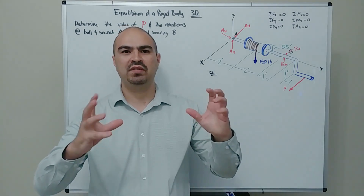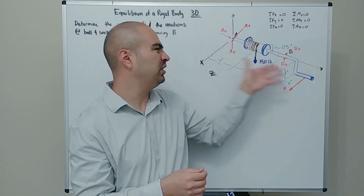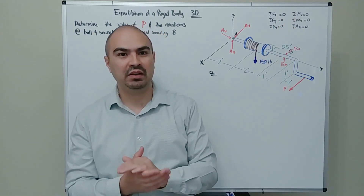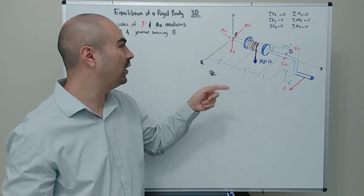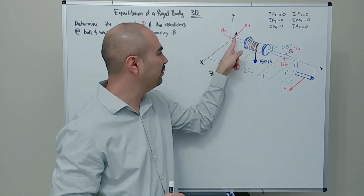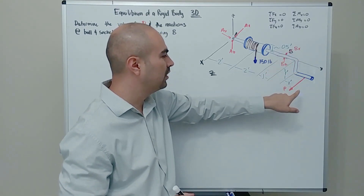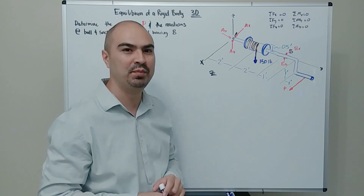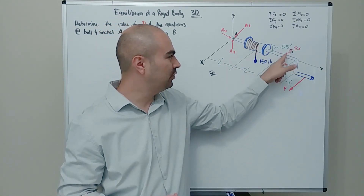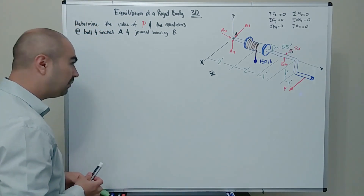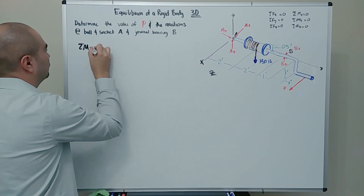The first question when summing moments: about which point? Forces are independent of the chosen point, but moments are not. If you pick point A, that's a good choice — I have Ax, Ay, and Az, three unknowns passing through that point, so if I sum moments about A they won't contribute. We'll only see Bx, Bz, and P show up. Always sum moments where you have the most unknowns.